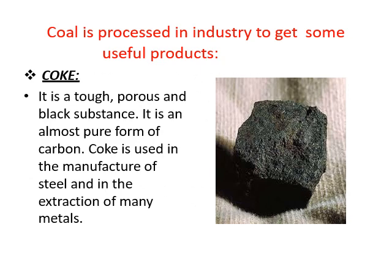Coal is processed in industry to get some useful products like coke. Coke is a tough, porous and black substance. It is an almost pure form of carbon. Coke is used in the manufacture of steel and in the extraction of many metals.